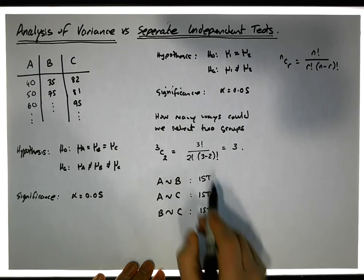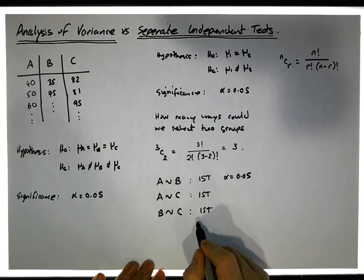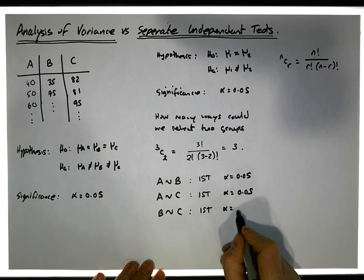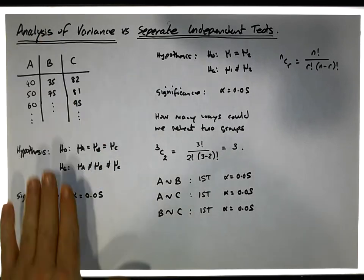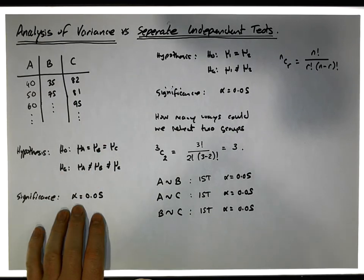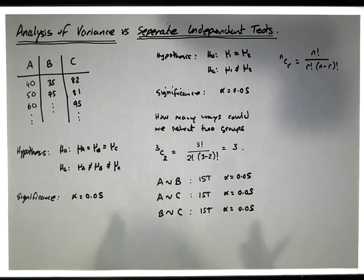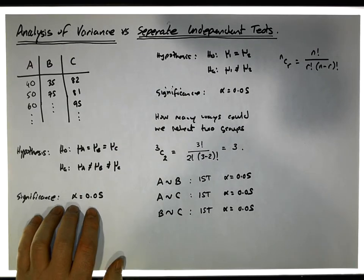For each one of these t-tests, the alpha is set at a specific rate — let's say 0.05. When we do this one, alpha is 0.05; the same for the second, and the same for the third. We now have three separate experiments. Analysis of variance has one specific alpha rate associated with it, whereas the separate independent samples t-tests each have their own alpha. The key question is: when we do ANOVA, we fix the alpha rate — the probability of committing a type one error.